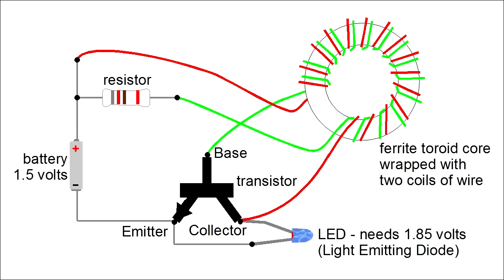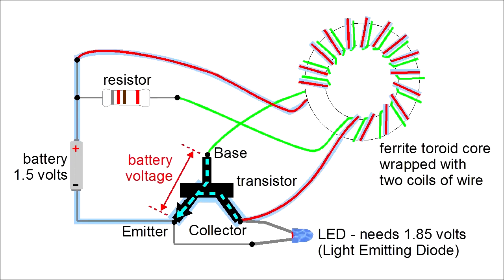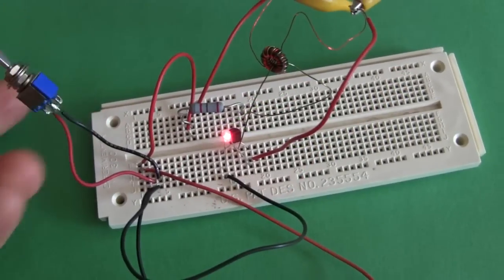Once the magnetic field in the core is all gone, there's no more current for the LED, and it turns off. And we wait for the battery voltage to start opening the base to emitter gate again, to start the whole thing over again. And that's how a basic Joule Thief circuit works.